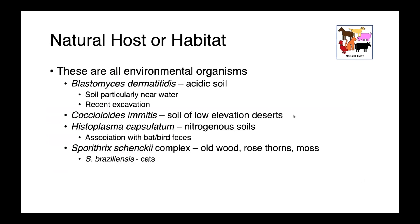These are all environmental organisms. Blastomyces dermatitidis is found in typically acidic soils, especially soils near water, and infections are more common following disturbances to the soil such as recent excavation. Coccidioides imitis is found in the soils of low-elevation deserts. Histoplasma capsulatum is found in nitrogenous soils and is highly associated with bird and bat feces. The Sporothrix schenckii complex tends to be associated with plant material — infections occur following exposure to old wood, rose thorns, or sphagnum moss.